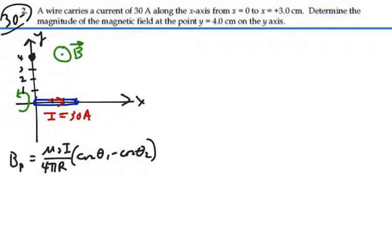In this case, theta one is from the direction of the current to the direction pointing to that point, so that's going to be this angle right here. And then, as the current is going to the right here, and we're pointing back to this point here, this angle here is going to be theta two.